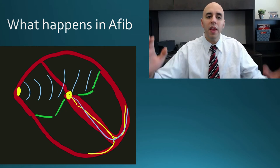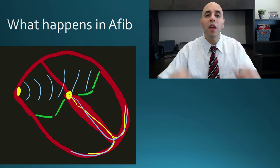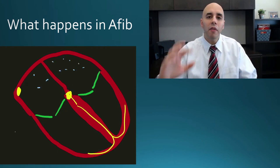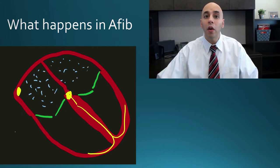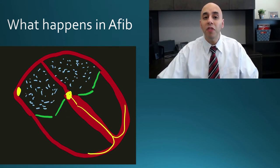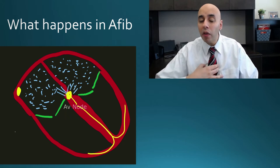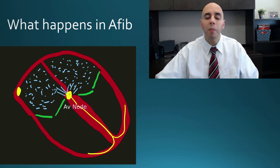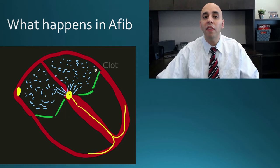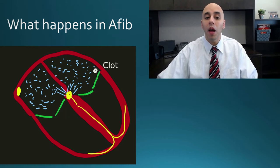Instead of a synchronized contraction of the top chamber, you have chaotic electrical activity occurring in the top chambers of the heart, and that leads to several consequences. You lose the contraction of the heart, so people can get fatigued and tired. You get a fast irregular heart rate, so people can get palpitations. And you lose the squeezing of the top part of the heart, which can lead to clots and stroke.